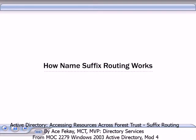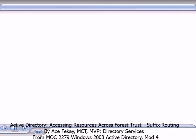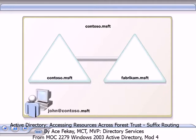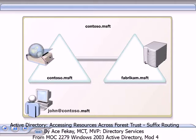In this animation, you will see how name suffix routing works across forests in Active Directory directory service. Name suffix routing is a mechanism that provides authentication across forests. Within a single forest, name suffix routing is not needed. For example, if a user logs on as john@contoso.msft and wants to access resources in the fabricham.msft domain in the same forest, the global catalog server uses the user principal name UPN suffix contoso.msft to authenticate the user's request.